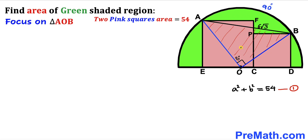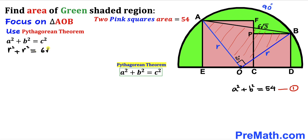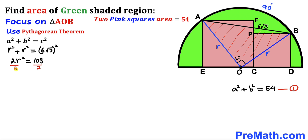Focusing on right triangle AOB: OA is the radius r, and OB is the radius r as well. Applying the Pythagorean theorem with legs r and r and hypotenuse 6√3: r² + r² = (6√3)², so 2r² = 108, and dividing both sides by 2 gives r² = 54.